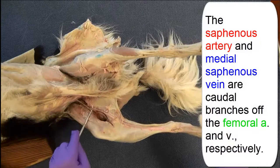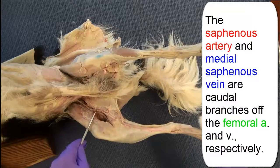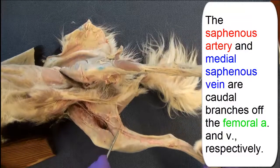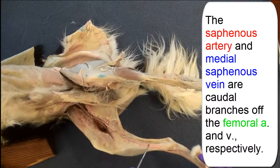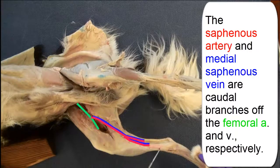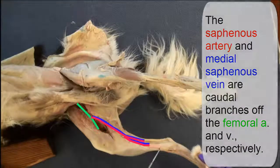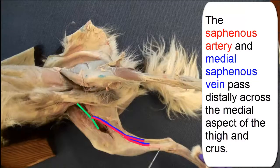The saphenous artery and medial saphenous vein are caudal branches off the femoral artery and vein, respectively. In this still image, the saphenous artery is shaded red and the medial saphenous vein is shaded blue. You can see their caudal branches off the femoral artery, shaded light green, and the femoral vein. The saphenous artery and medial saphenous vein pass distally across the medial aspect of the thigh and crus.